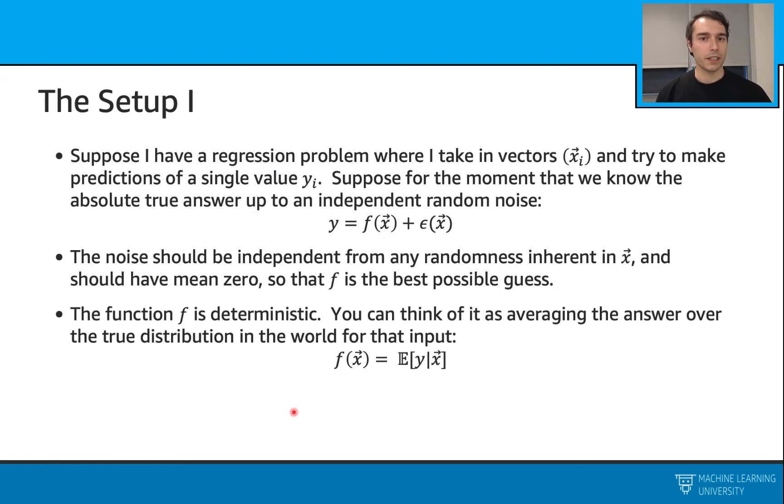In this derivation, we are looking at the regression problem, and we have this mean squared error. And we have this x, y data points. We are using x's to predict y's. Here we will write y in terms of f plus independent random noise. Here again, f is the true function, and we have this independent random noise. This noise should be independent from any other randomness inherent in x, and it should have mean zero. Overall, this will be useful when we go on with this derivation. Also, the function f is deterministic. We can think of it as averaging the answer or the true distribution in the world for that input. So we can simply say that this can be the expected value of y for the given input x.